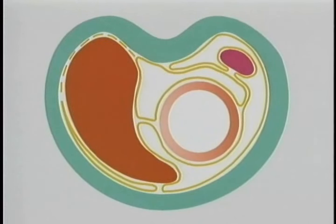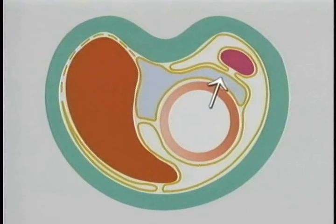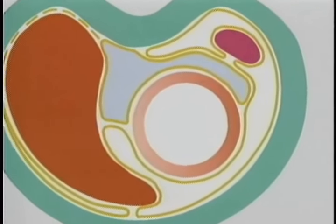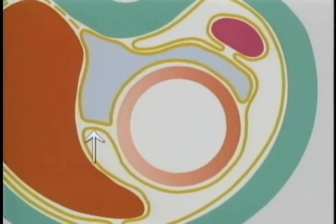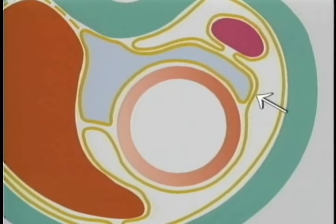These changes produce this almost separate pocket behind the stomach — the lesser sac. This part of the ventral mesogastrium is the lesser omentum, and this part of the dorsal mesogastrium will become the greater omentum.